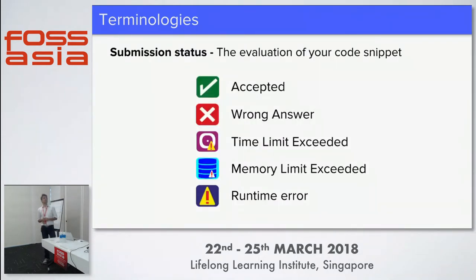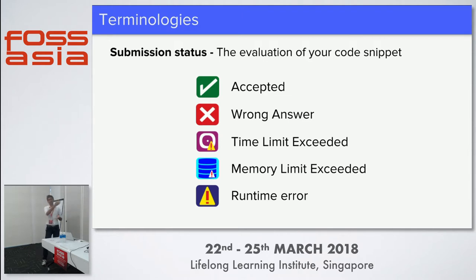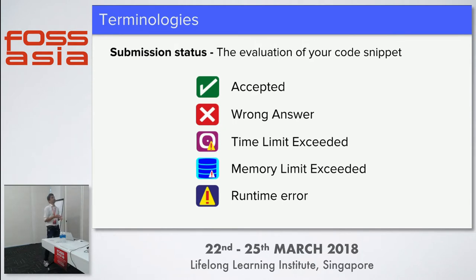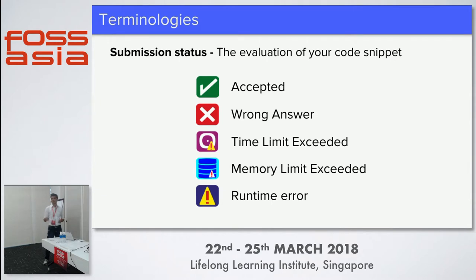There is something called submission status. These websites have an option to upload your code and they'll give you a status. The first one is Accepted - they have a list of test cases which they run against your code. Wrong Answer means one of the test cases failed. Time Limit Exceeded means your code is taking a lot of time to execute. Memory Limit Exceeded means you declared an array that isn't actually required as a solution. Runtime Error is basically if your code is giving some error on some test case.